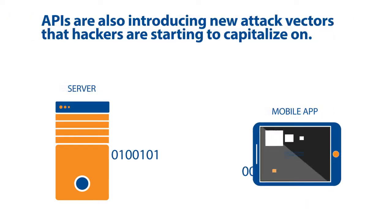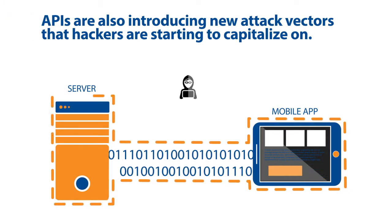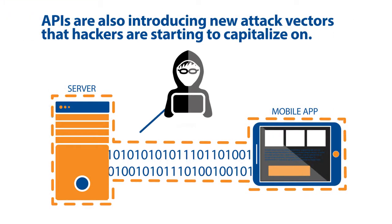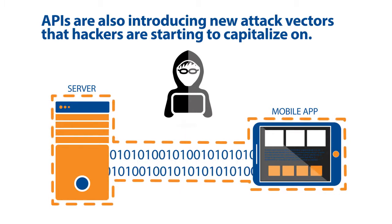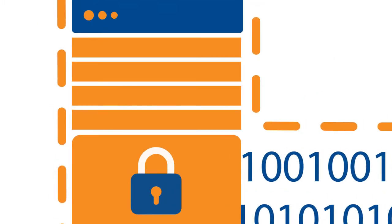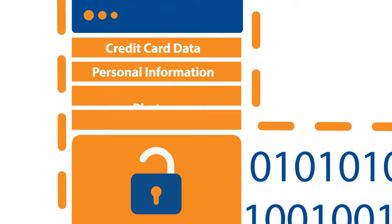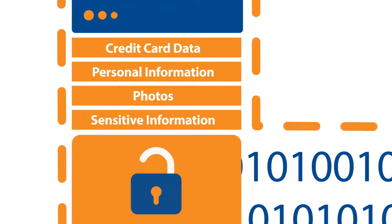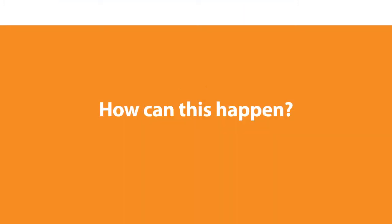However, APIs are also introducing new attack vectors that hackers are already starting to capitalize on. If not properly secured, they can expose applications and data on back-end servers.